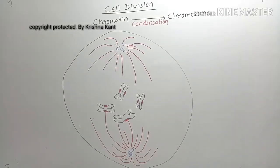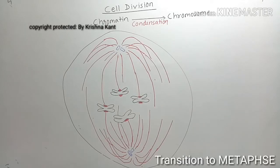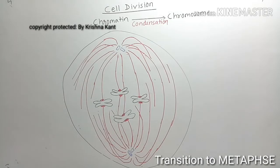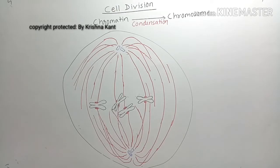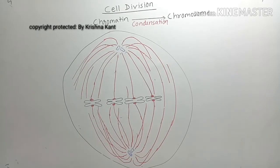Finally, the spindle fibers from the centrioles bind to each chromosome. Each chromosome is attached to two spindle fibers on opposite kinetochores. The spindle fibers bring them to the equator during metaphase.